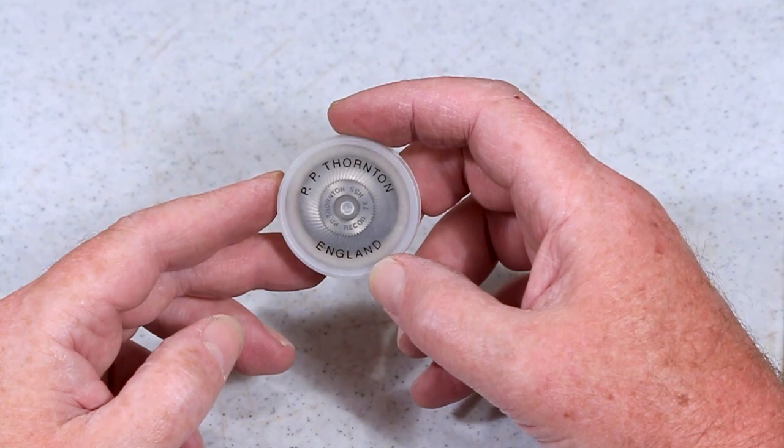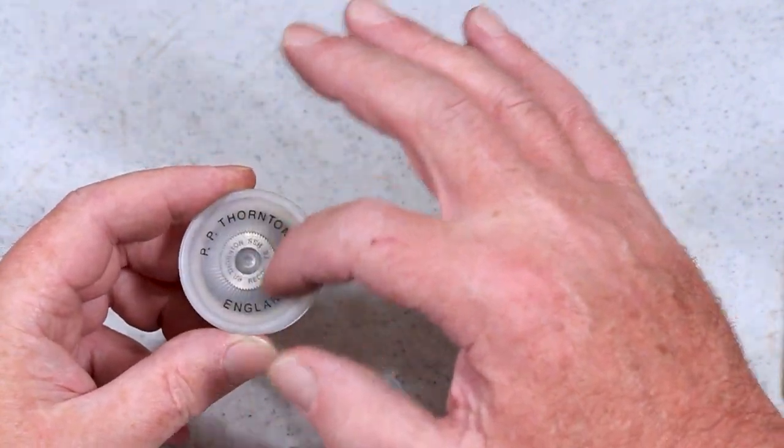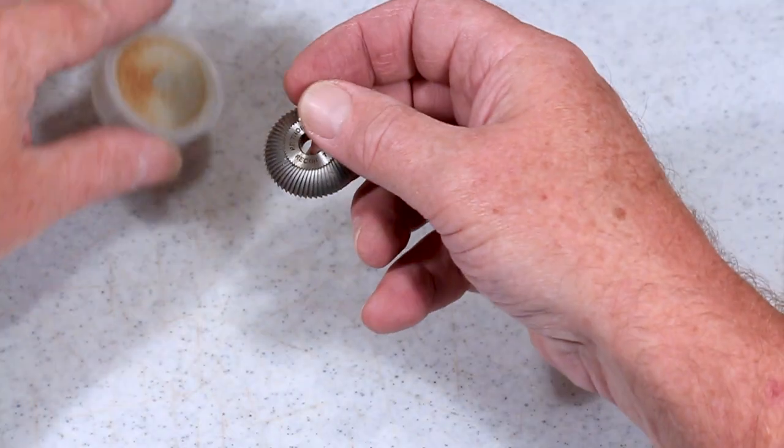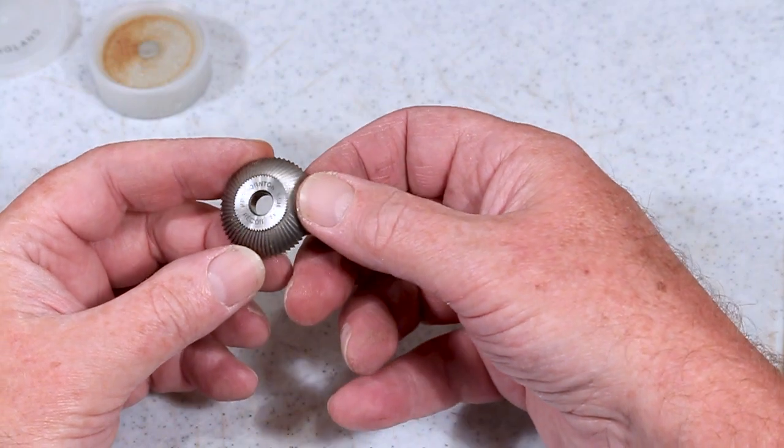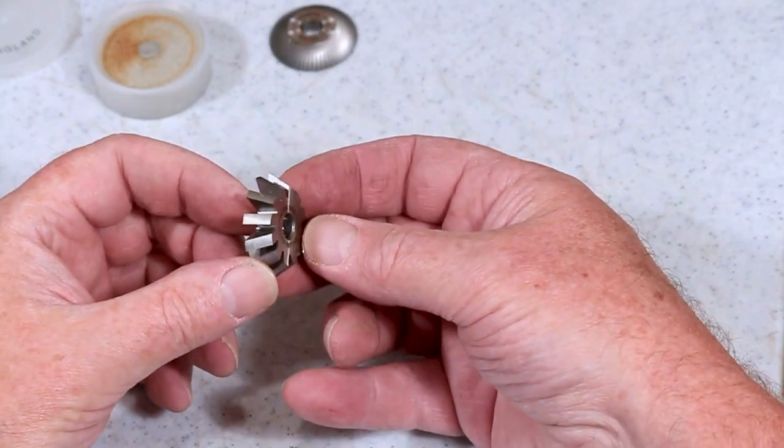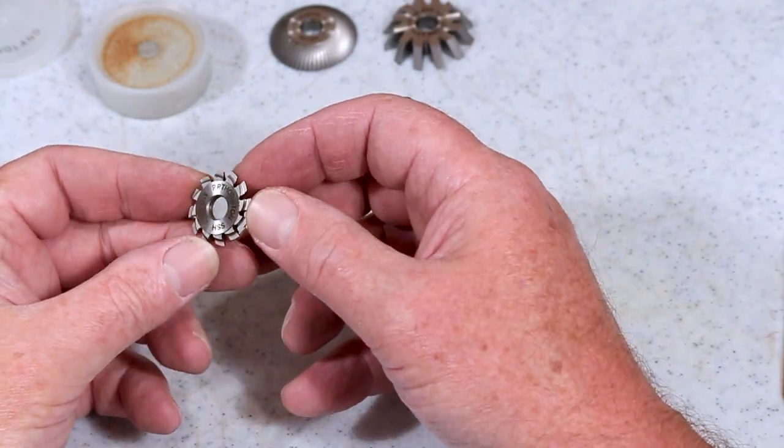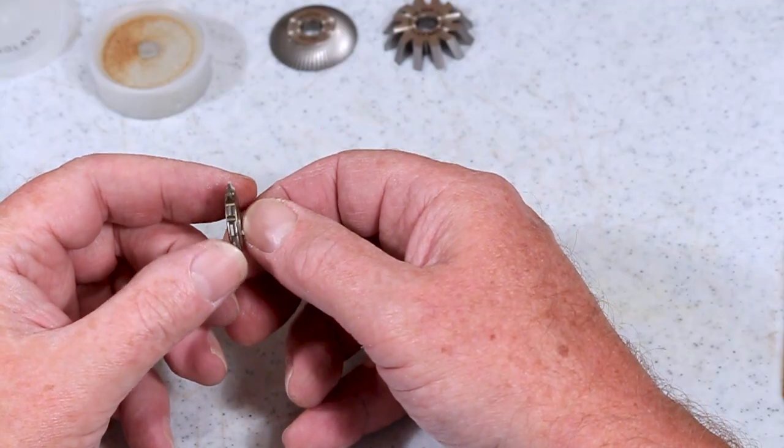To make the wheels you're going to need a whole set of cutters. These are available from PP Thornton, which is a company in England. This cutter here is for making the recoil and this one for making the ratchet, and then you'll need three epicycloidal cutters for cutting the rest of the wheels.